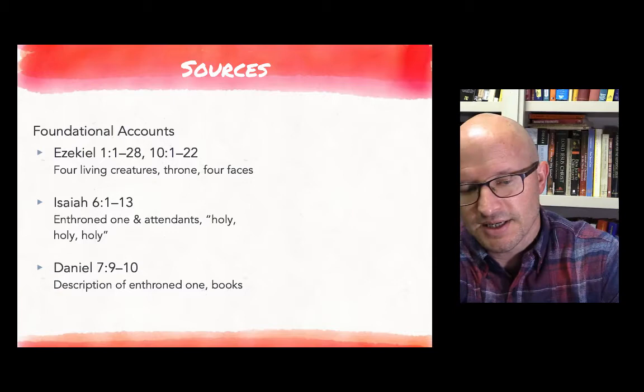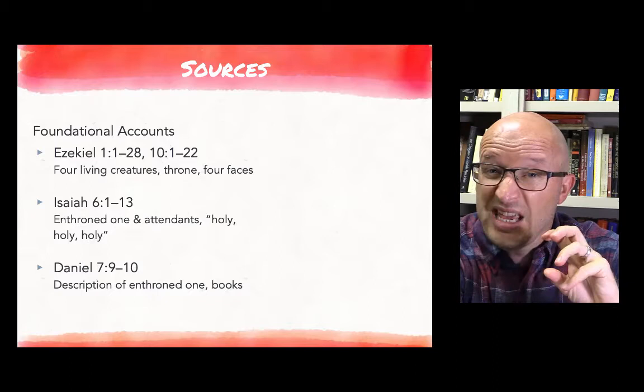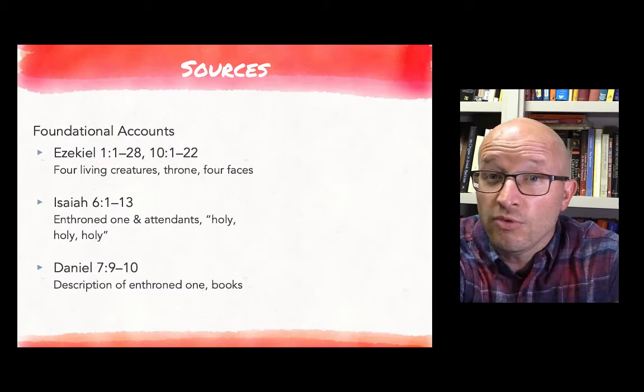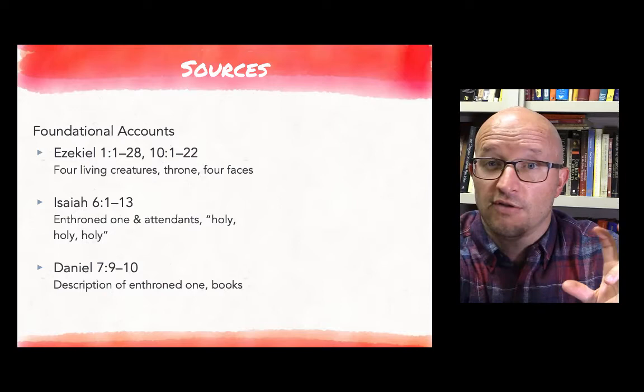And then in Daniel 7, verses 9 through 10, we see a pretty extensive description of the one who is seated upon the throne. We have mention of other thrones, maybe of divine counsel perhaps, and there's also the mention of books—the books of people's lives or their deeds perhaps, though that's probably open for interpretation.